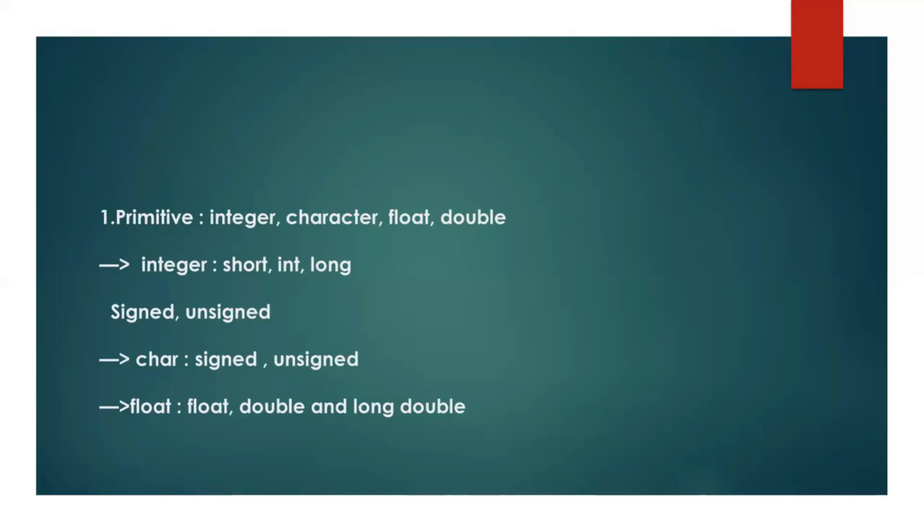In primitive data types, there are four things: integer, character, float, and double. Integer is short, int, long. And it has again classified into signed and unsigned. Character: signed and unsigned. Float: float, double, and long double.